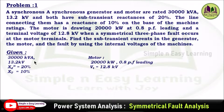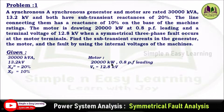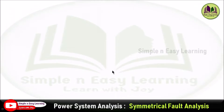The given data: 30,000 kVA, 13.2 kV, and the sub-transient reactance X_D'' is 20% and X_T equals 10%. On the motor side: 20,000 kW, 0.8 power factor leading, and the terminal voltage is specified as 12.8 kV.